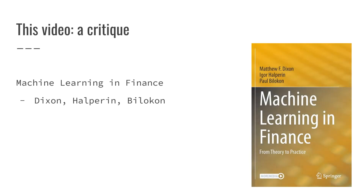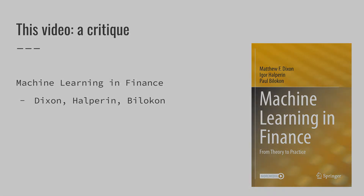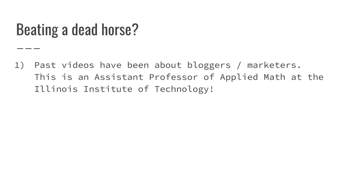I'm really excited for this video — it's not every day I get to critique a published book by a big name like Springer. The book I'm referring to is called 'Machine Learning in Finance: From Theory to Practice,' authored by Matthew Dixon, Igor Halperin, and Paul Bilokon. You might think I'm beating a dead horse with this video, which is kind of true — I've already spoken at length about the many mistakes people make when trying to predict stock prices.